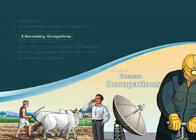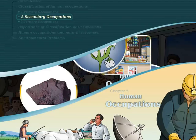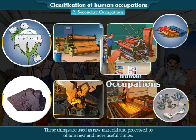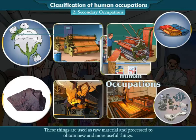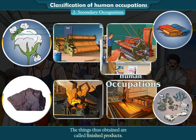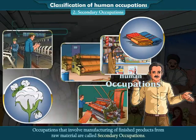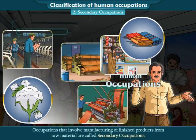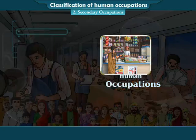Secondary Occupations. We get different types of things through primary occupations. These things are used as raw material and processed to obtain new and more useful things. The things thus obtained are called finished products. Occupations that involve manufacturing of finished products from raw materials are called secondary occupations.